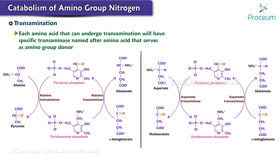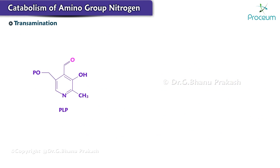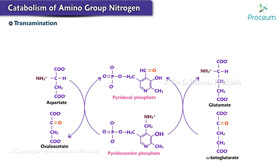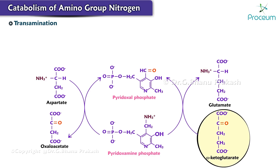For example, the enzymes catalyzing the transfer of the amino group from alanine and aspartate are termed alanine aminotransferase (ALT) and aspartate aminotransferase (AST) respectively. Pyridoxal phosphate is bound to the enzyme near its active site both by electrostatic interactions and by a Schiff base bond with a lysine side chain of the enzyme. PLP helps in the transfer of the amino group from an amino acid to an alpha keto acid via a reaction that follows a ping-pong mechanism.